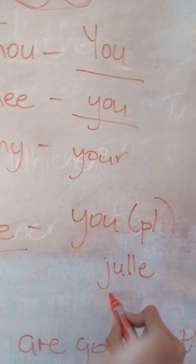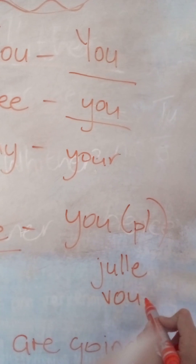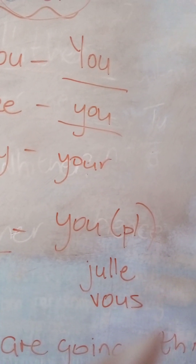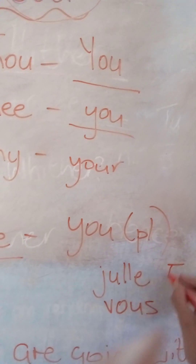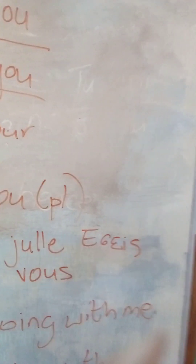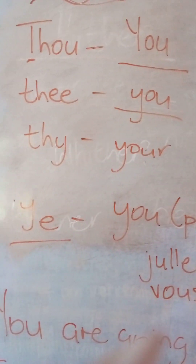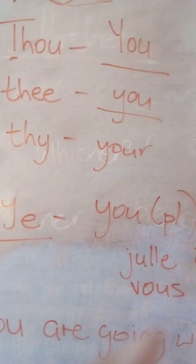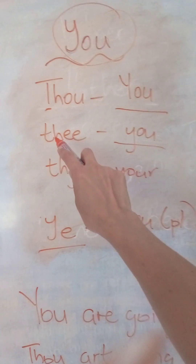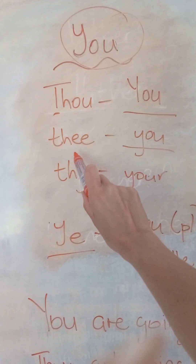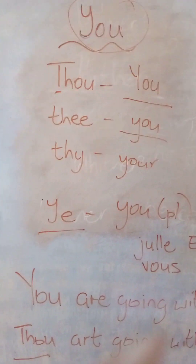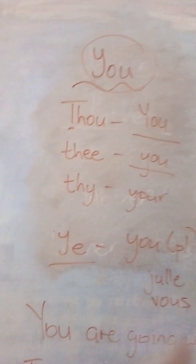In a language like French it might be something like 'vous,' and in a language like Greek I think it's 'eseis' — basically 'you guys.' So I hope you guys have that. 'You' the subject: 'thou.' 'Thee' is 'you' the object. 'Thy' is 'yours.' 'Ye' is 'you guys' — the whole lot of you. Thank you so much.